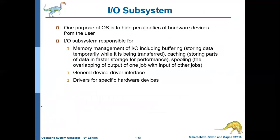The next concept is the I/O system or I/O subsystem. One of the core purposes of the operating system is to hide the complexity or the unique nature of different hardware devices. Different hardware devices may work in different styles, but the user need not know these details — the operating system hides them so the user feels all hardware devices are working in the same way.